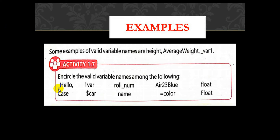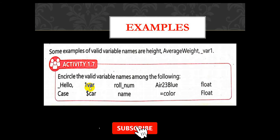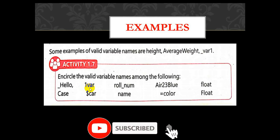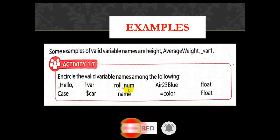This variable name starts with an underscore and a letter — so that is a valid variable name. Now this variable starts with the digit '1', and we have studied that a variable cannot start with a digit, so this is an invalid variable. The role number is also valid. This is also valid.